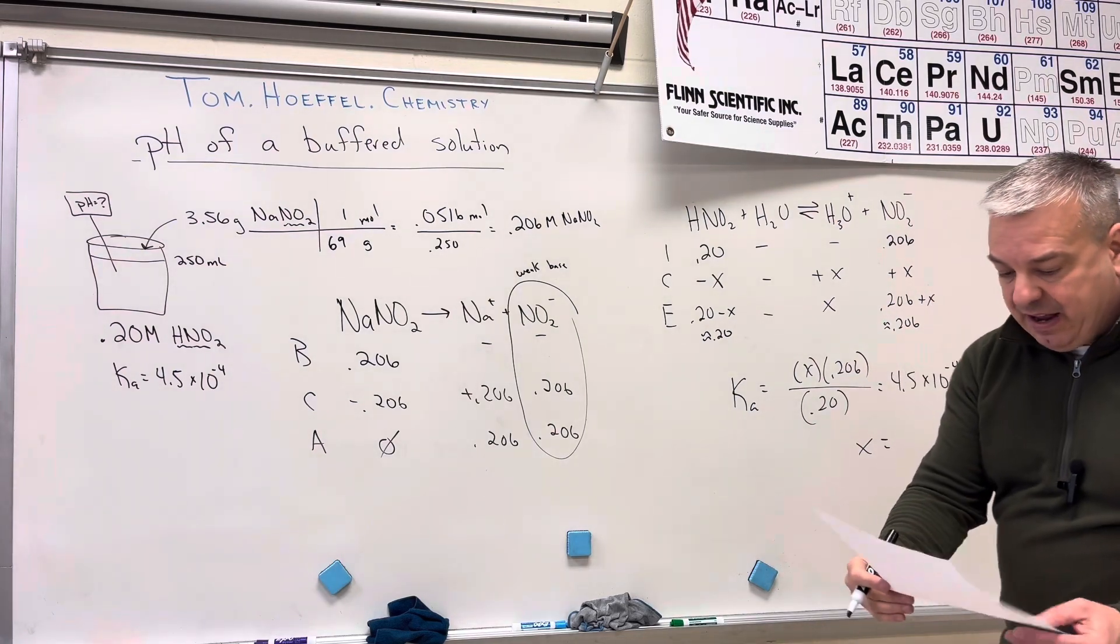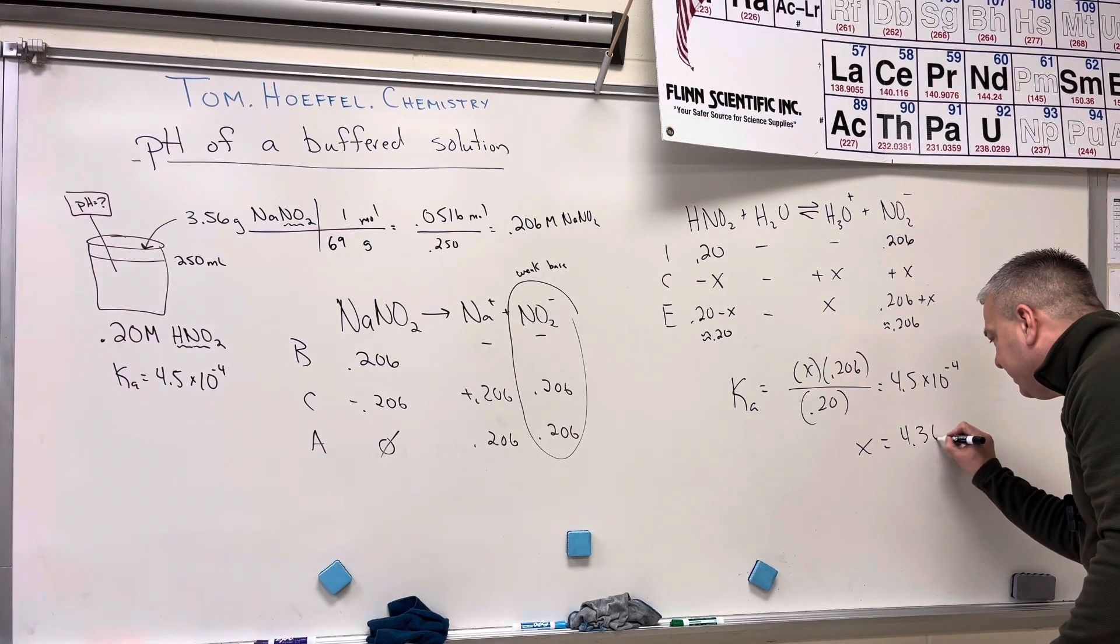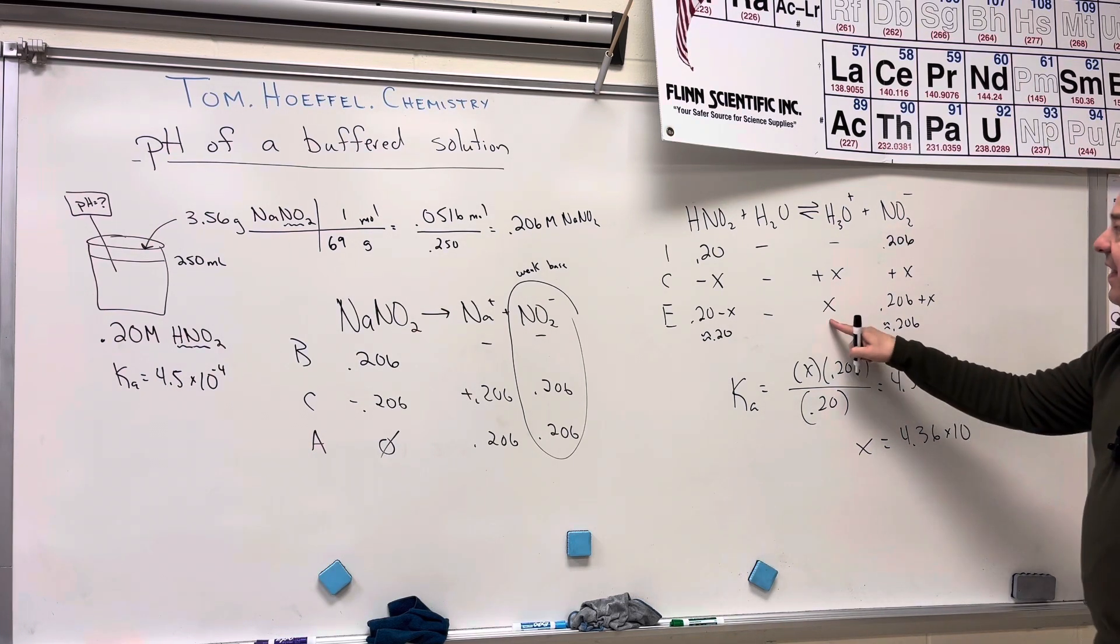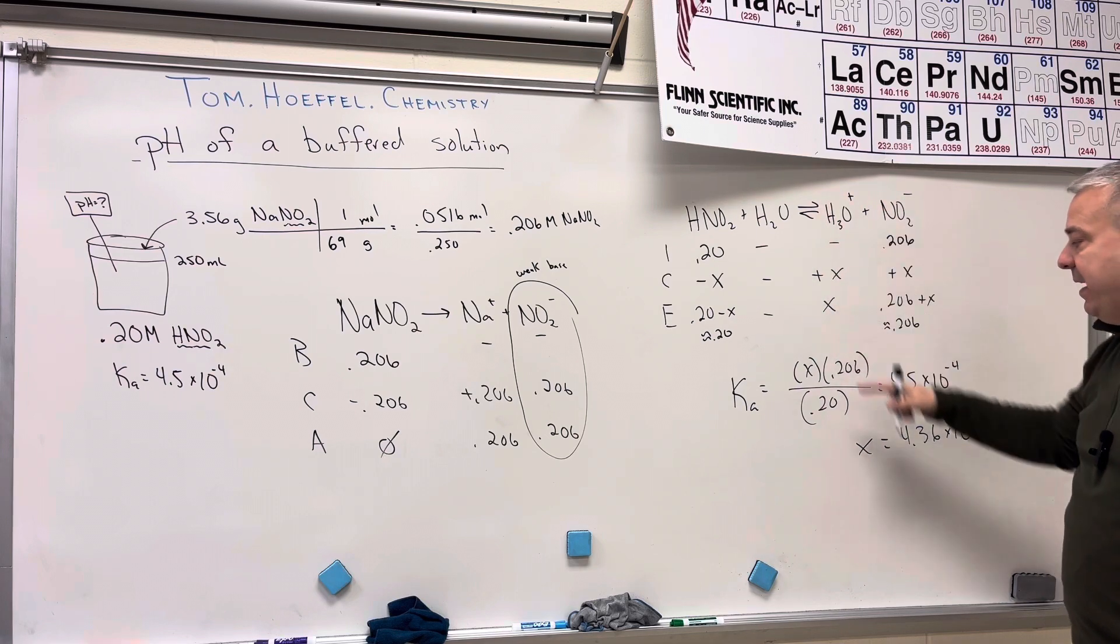And that X value comes out to be 4.36 times 10 to the negative 4. And that's equal to the concentration of hydronium ions.